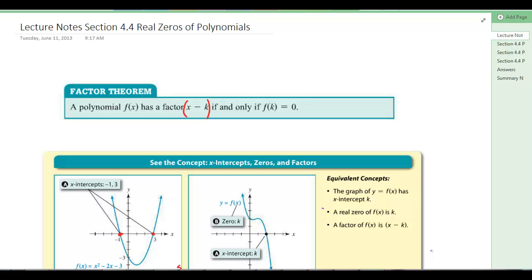We restate the factor theorem which we had in another section. A polynomial f of x has a factor x minus k if and only if f of k equals 0. Remember we had that remainder theorem that said f of k would give you the remainder. And if the remainder is 0, it means that thing went in there evenly and it was a factor. So this factor theorem should somewhat make sense to you.